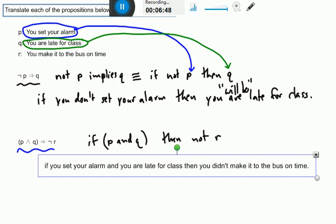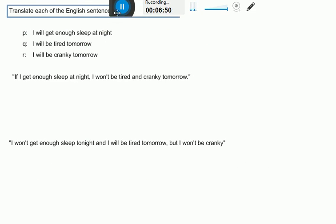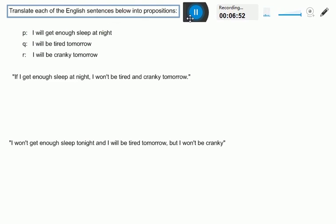So now we're going to take a look at this in the opposite direction. We are going to look at three different propositions. I will get enough sleep at night. I will be tired tomorrow. I will be cranky tomorrow. And start with these English sentences here and try to translate them into logical expressions.